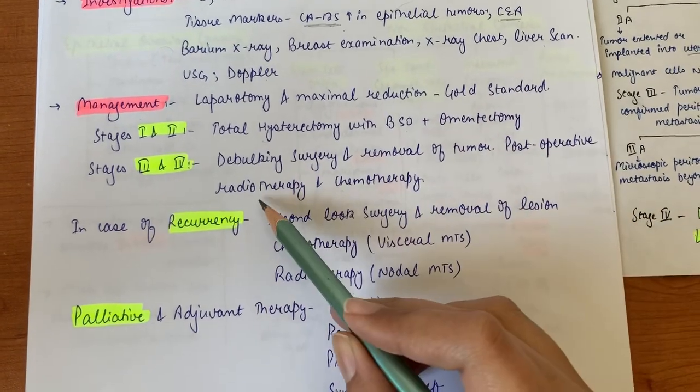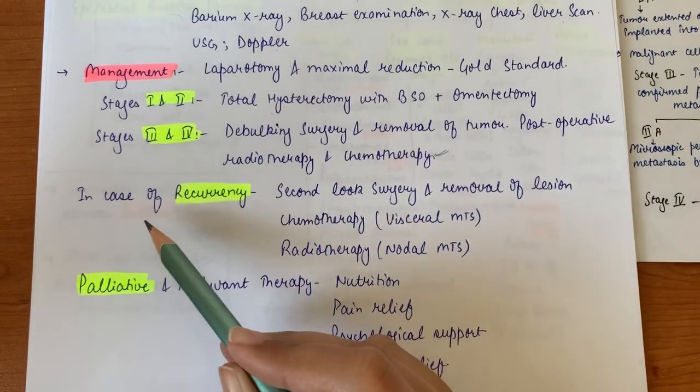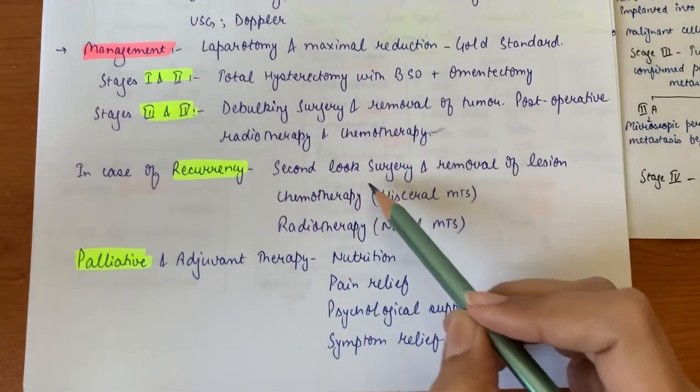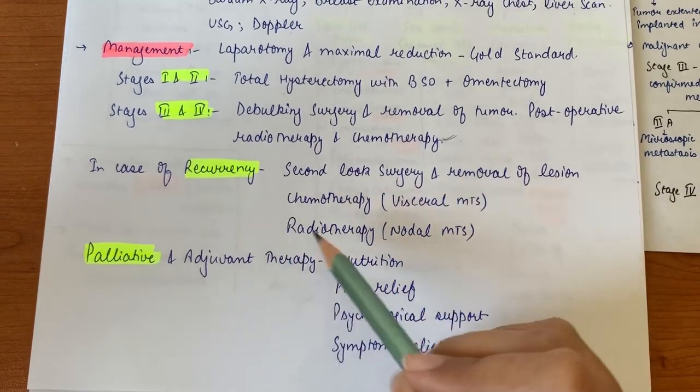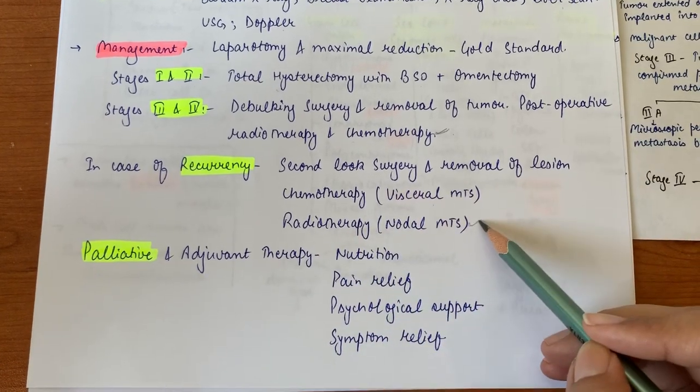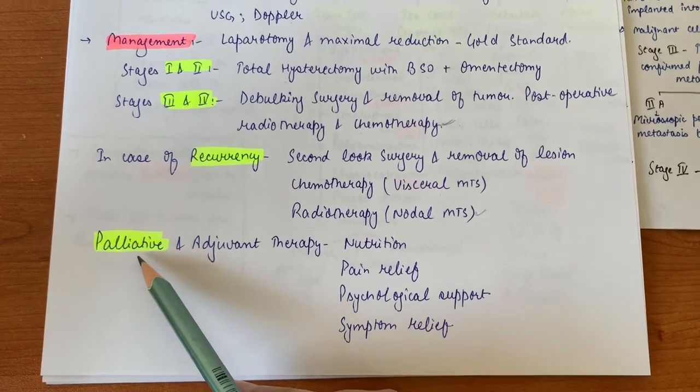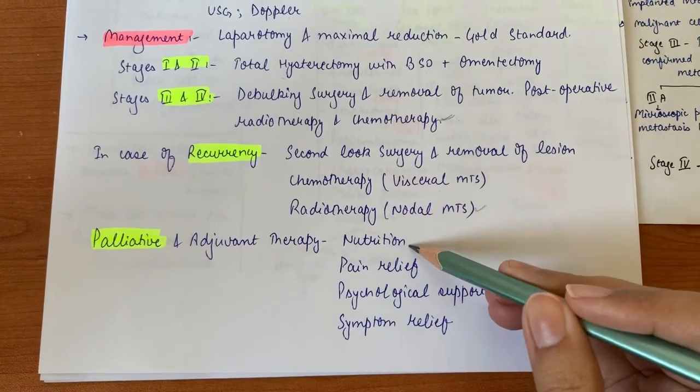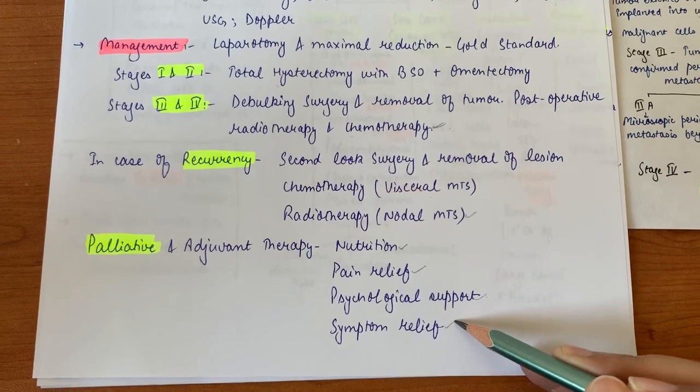Postoperative radiotherapy and chemotherapy are necessary in stages three and four. In case of recurrent tumors, second-look surgery should be done, then removal of the lesion causing recurrence. Chemotherapy for visceral metastasis and radiotherapy for lymph nodal metastasis. Other modalities are palliative. Adjuvant therapy consists of nutrition, pain relief, psychological support, and symptom relief.